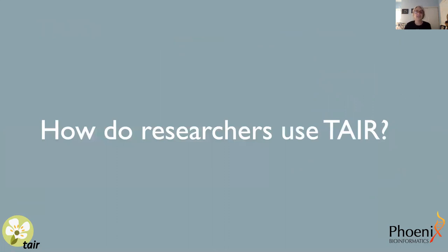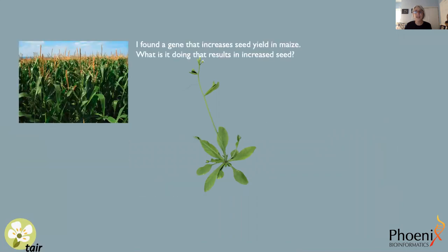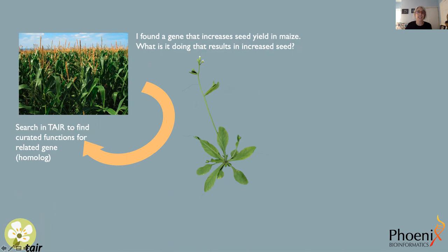How does our community use TAIR to accelerate their research? A common example: a researcher working on a crop species such as maize has identified a gene associated with a favorable trait — say, increased seed yield — and wants to understand what that gene might be doing. They might take that gene sequence and use it to search TAIR to find similar genes in Arabidopsis, then use the curated gene function data in TAIR to try to understand what their gene in maize might be doing.